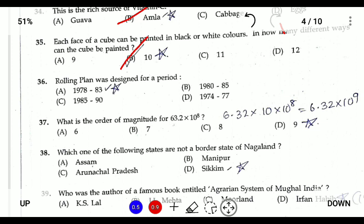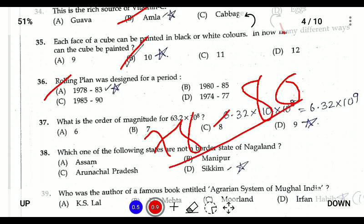Question thirty-six: the Rolling Plan was designed for the period 1978 to 1983. After the fall of Indira Gandhi, the Janata government formed a new plan from 1978 to 1983; however, it lasted only from 1978 to 1980 for two years, when Indira Gandhi came back to power in 1980.